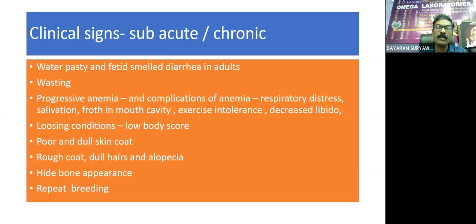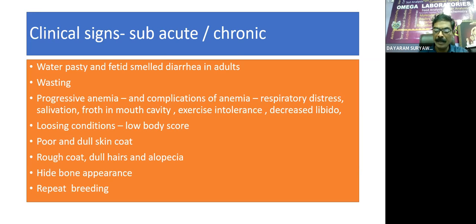In chronic coccidiosis, the enteropathy means whatever nutrients are required for maintenance of pregnancy and uterine milk will not be available, ultimately leading to death of the embryo and repeat breeding in sheep and goat.